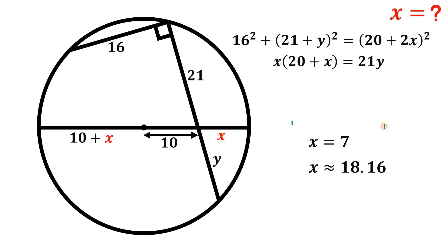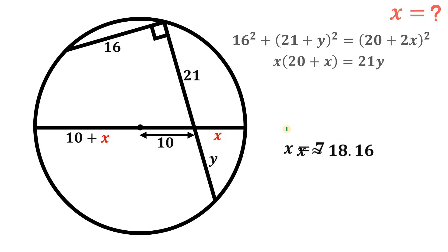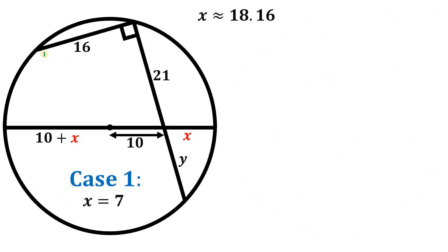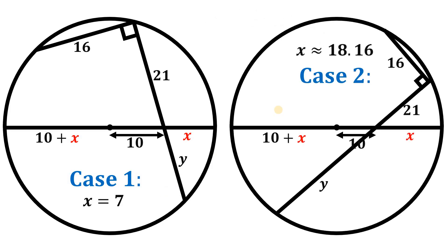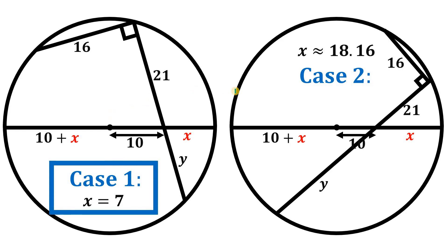We get two possible values of x because in this situation there are two possible geometric scenarios. In the first case, when the chord of 16 and the segment of 21 are in one position, x = 7. In the second case, with a different positioning, x ≈ 18.16 units. Therefore, the two possible values of x are x = 7 or x ≈ 18.16 units, and we are done.